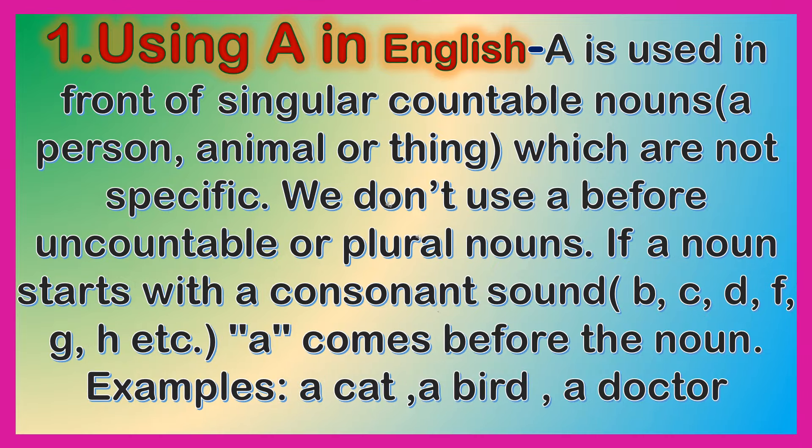Using 'a' in English: 'a' is used in front of singular countable nouns — a person, animal, or thing — which are not specific. We don't use 'a' before uncountable or plural nouns. If a noun starts with a consonant sound (b, c, d, f, g, h, etc.), 'a' comes before the noun. Examples: a cat, a bird, a doctor.